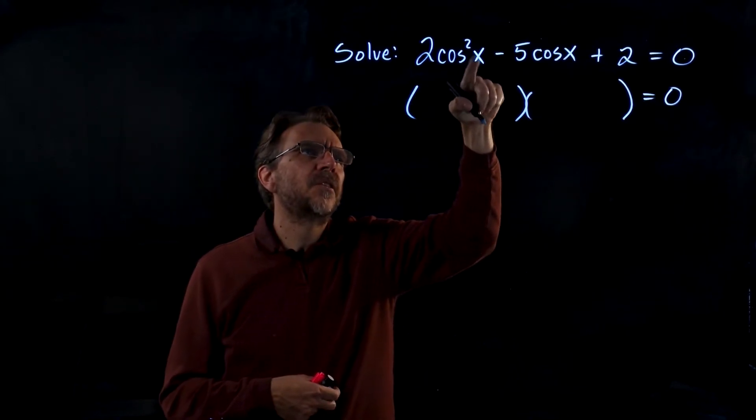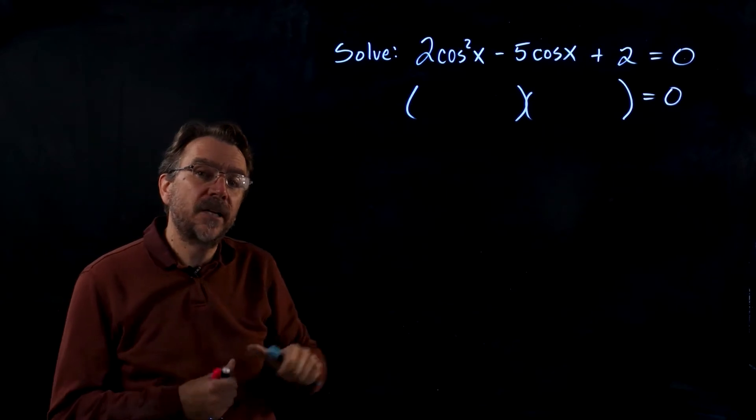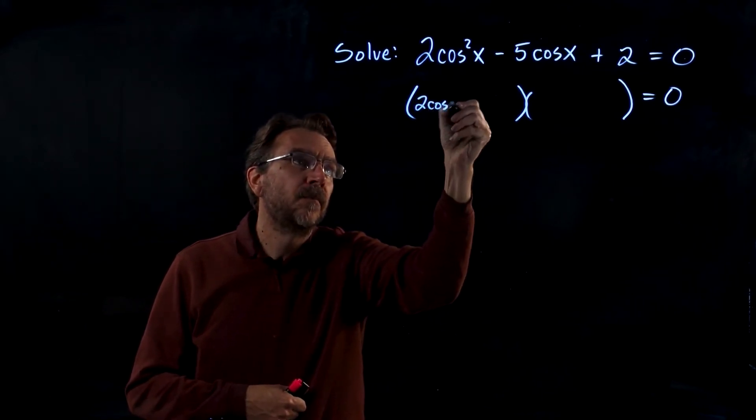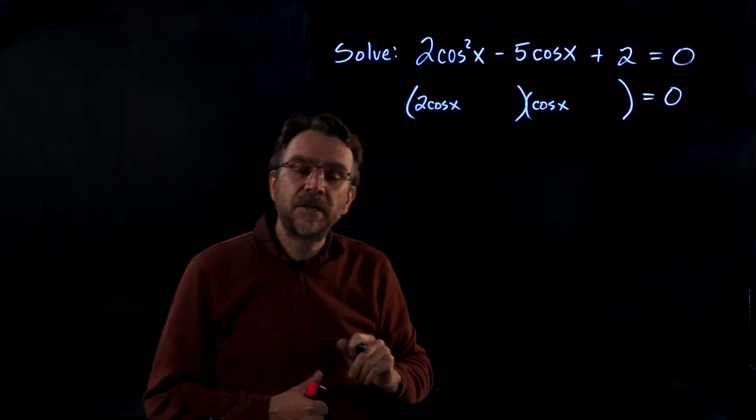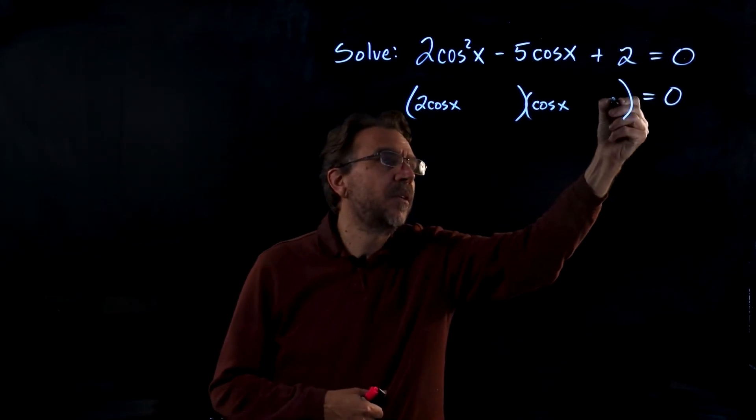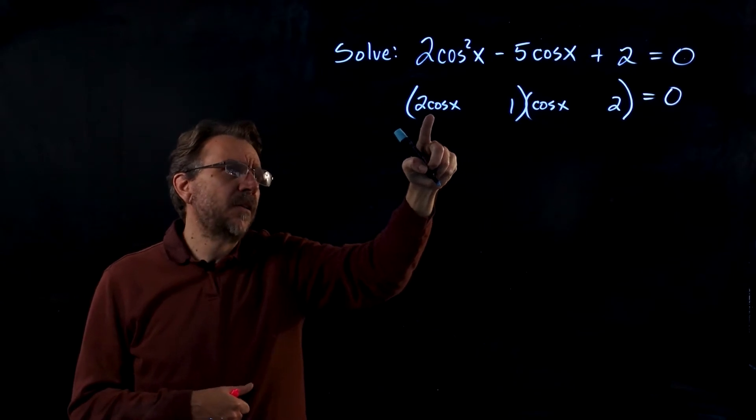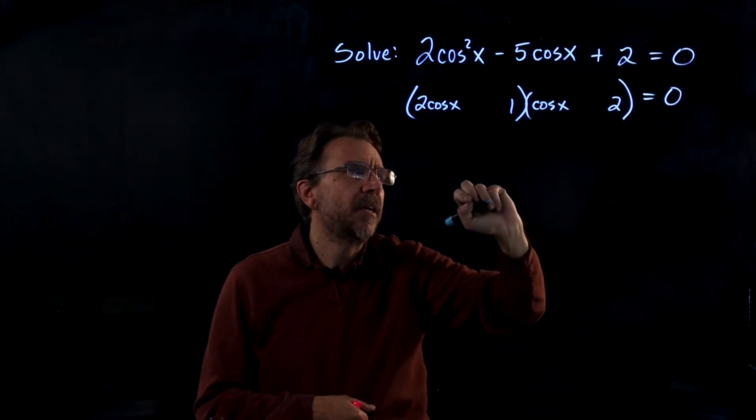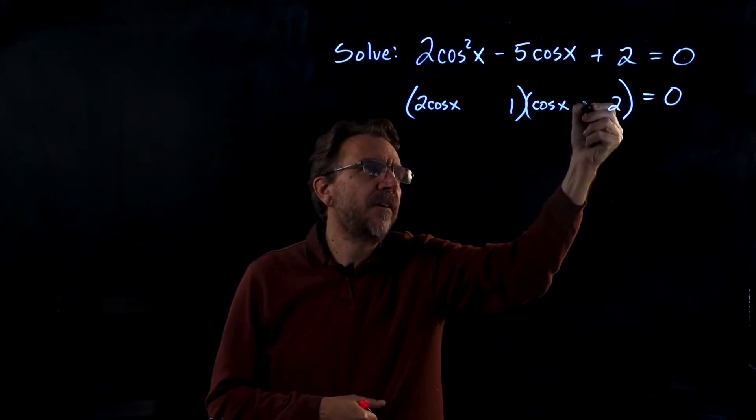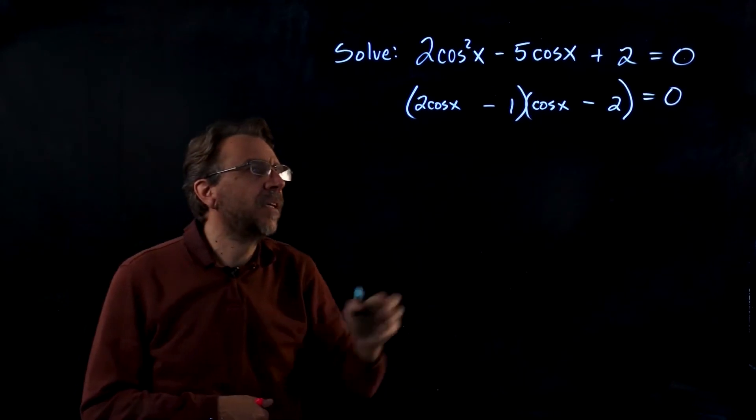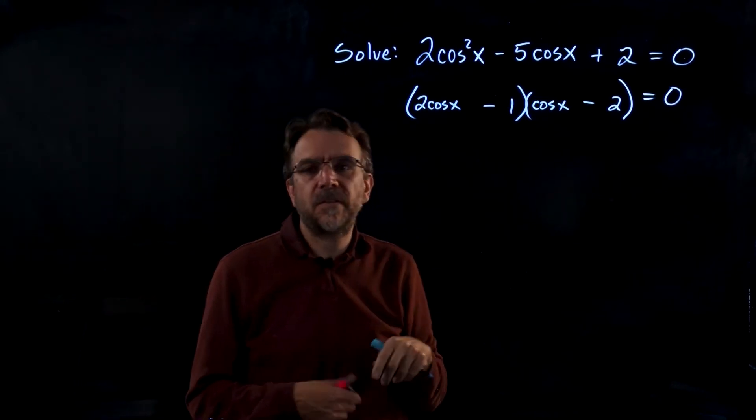First term first, 2 cosine squared x, that factors as 2 cosine x times cosine x. Two factors, 1 times 2, now I need to get a 5, so I'm going to put the 2 over here and the 1 there. My outer product is 4x, my inner product is 1x. 4 and 1 adds up to negative 5 if they're both negative. And then a negative times a negative is positive, so this one did factor.